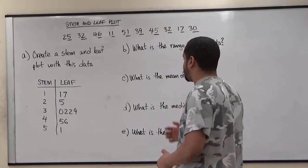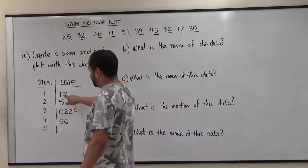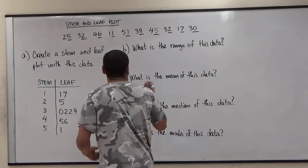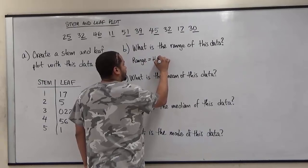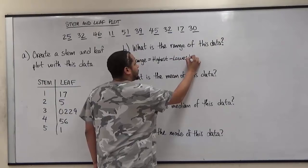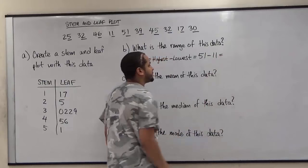After we finish the stem and leaf component, what we want to do is find the range. To find the range we take the first stem and leaf and the last stem and leaf. Our first stem and leaf is eleven, our last is fifty-one. Remembering that the range is the highest value minus the lowest, fifty-one take away eleven gives us forty. So our range is forty.